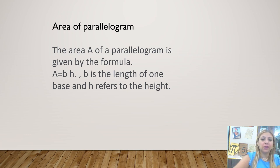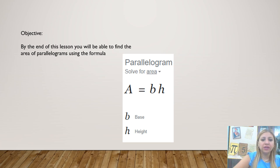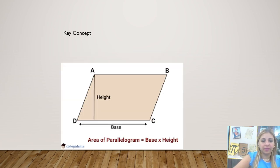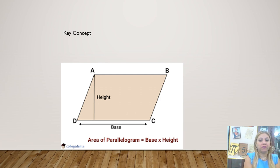We will learn also about area of parallelograms. The area of a parallelogram is given by the formula: area equals base times height, where B is the length of one base and H refers to the height. By the end of this lesson, you will be able to find the area of parallelograms using the formula: area equals base times height. As you see in this example, this is a parallelogram that has two pairs of parallel sides. To find the area of the parallelogram, just multiply the base by the height.